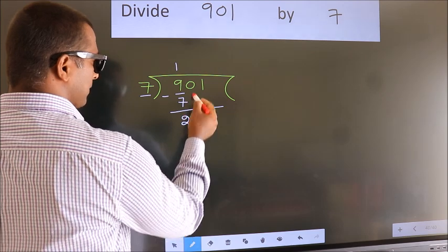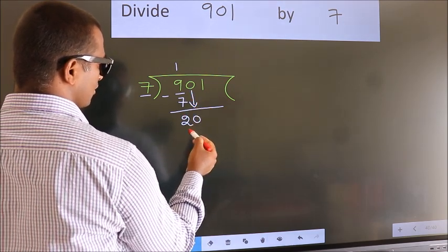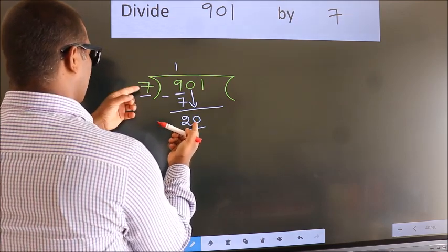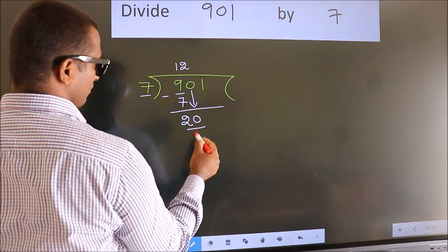After this, bring down the beside number, so 0 down, so 20. A number close to 20 in 7 table is 7 twos, 14.